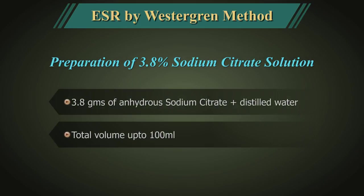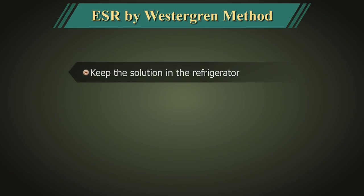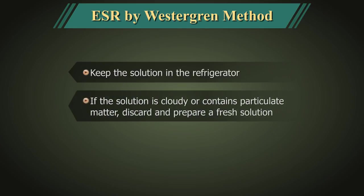Preparation of 3.8% trisodium citrate solution: Mix 3.8 grams of anhydrous trisodium citrate with distilled water, making the total volume up to 100 ml. Keep the solution in the refrigerator. If the solution is cloudy or contains particulate matter, discard and prepare a fresh solution.